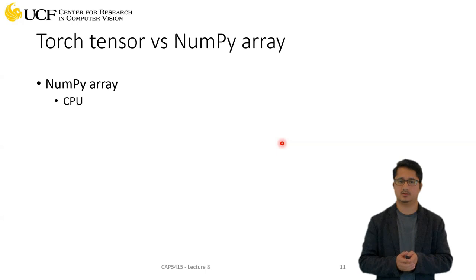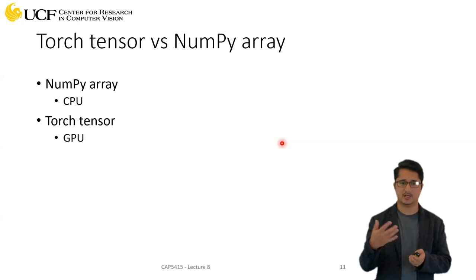Now NumPy arrays, whatever computation is happening, it will happen in the CPU. One biggest difference why we need tensors is because tensors will allow you to perform those computations—multiplication, addition—on the GPU, which will be much more efficient.